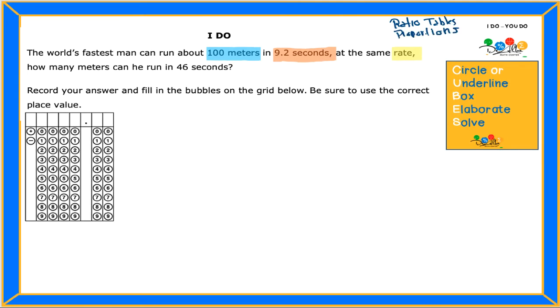Now I'm going to focus on the question. How many meters, and I just use blue for meters, in 46 seconds. I did circle or underline, which I did highlight. Then I'm going to box the question: How many meters in 46 seconds?